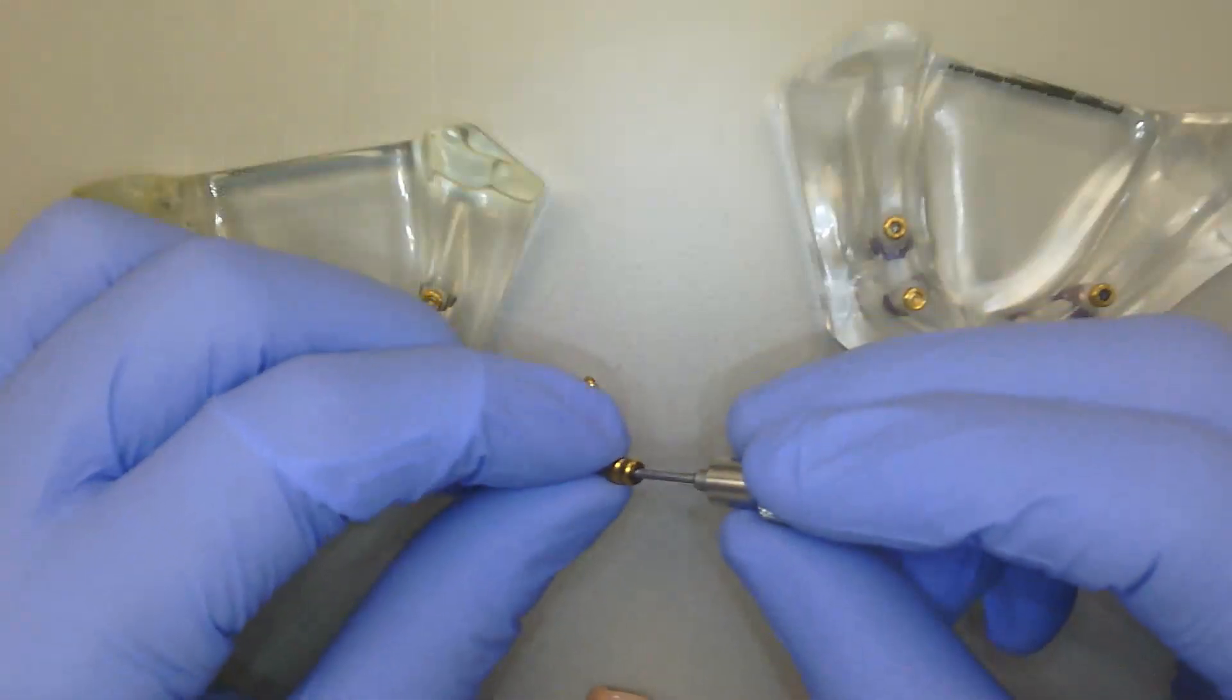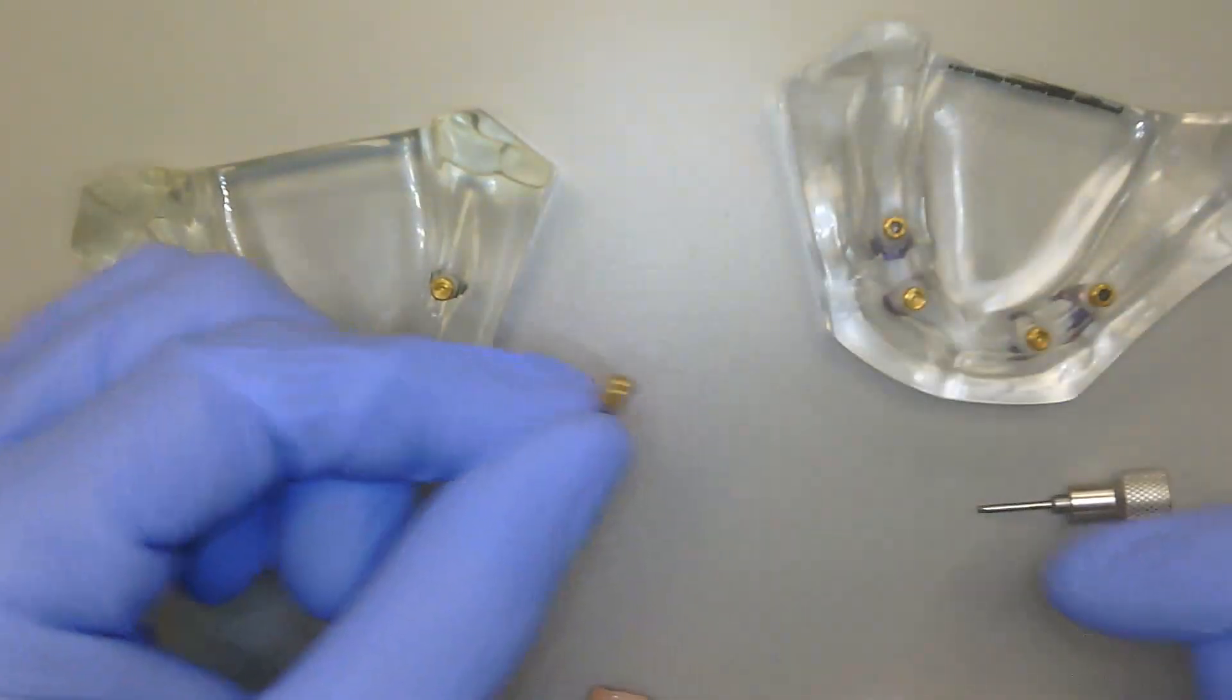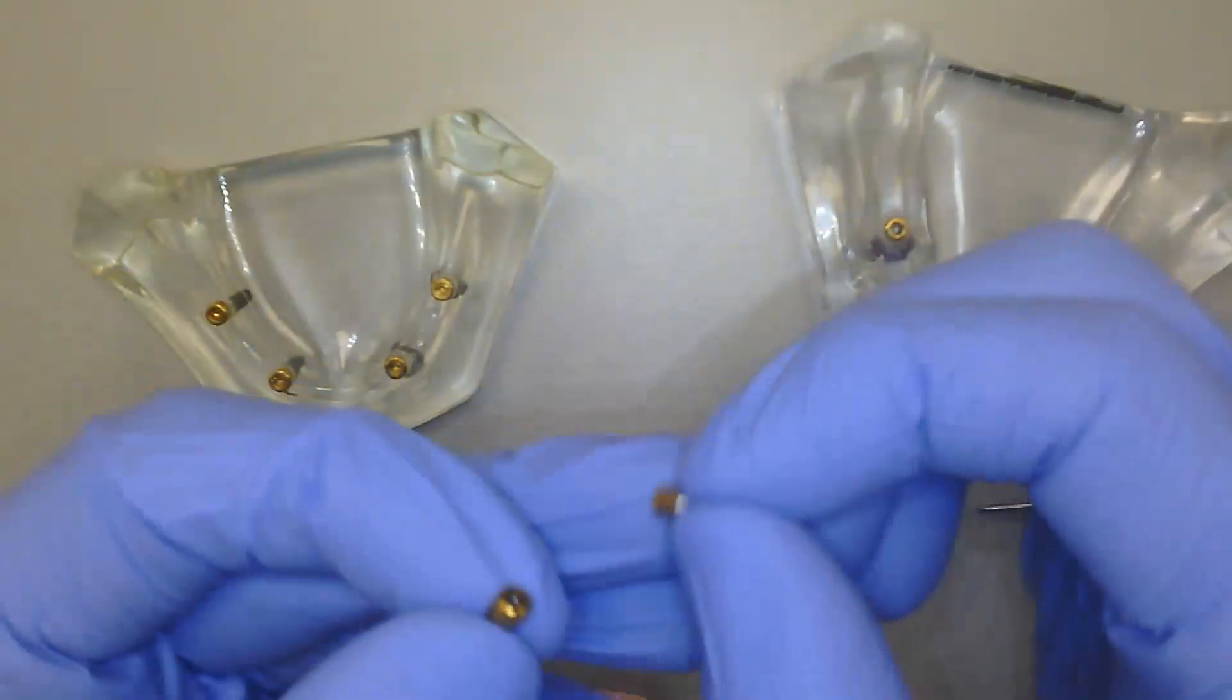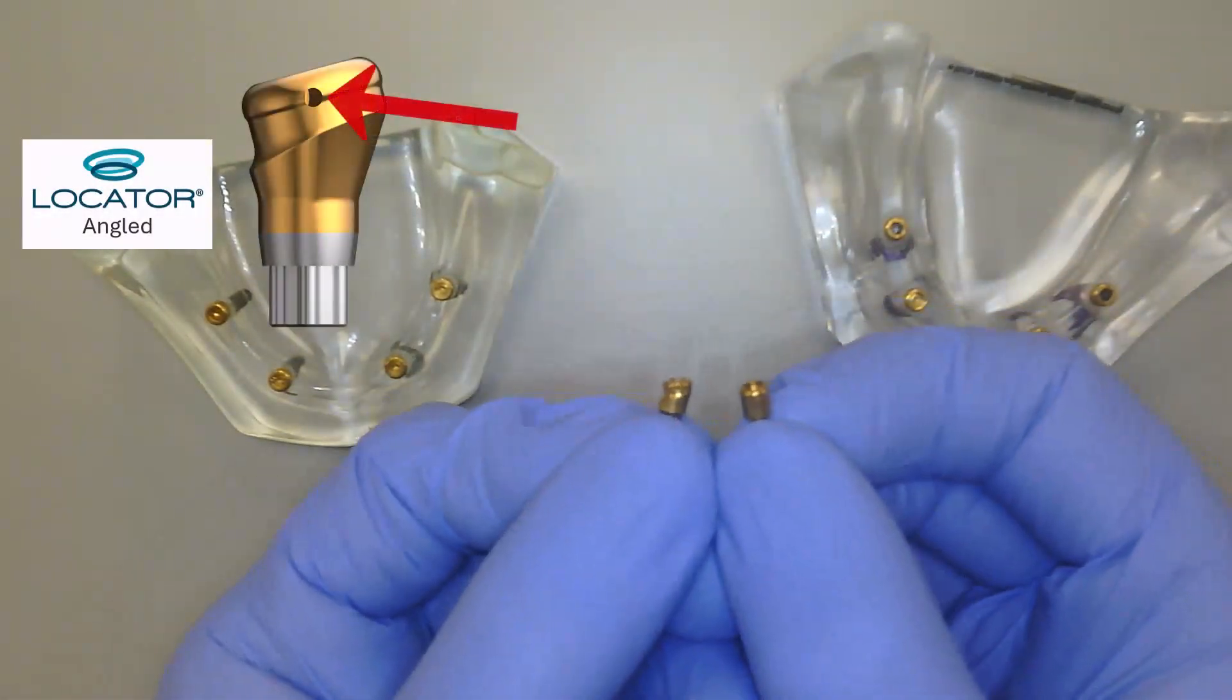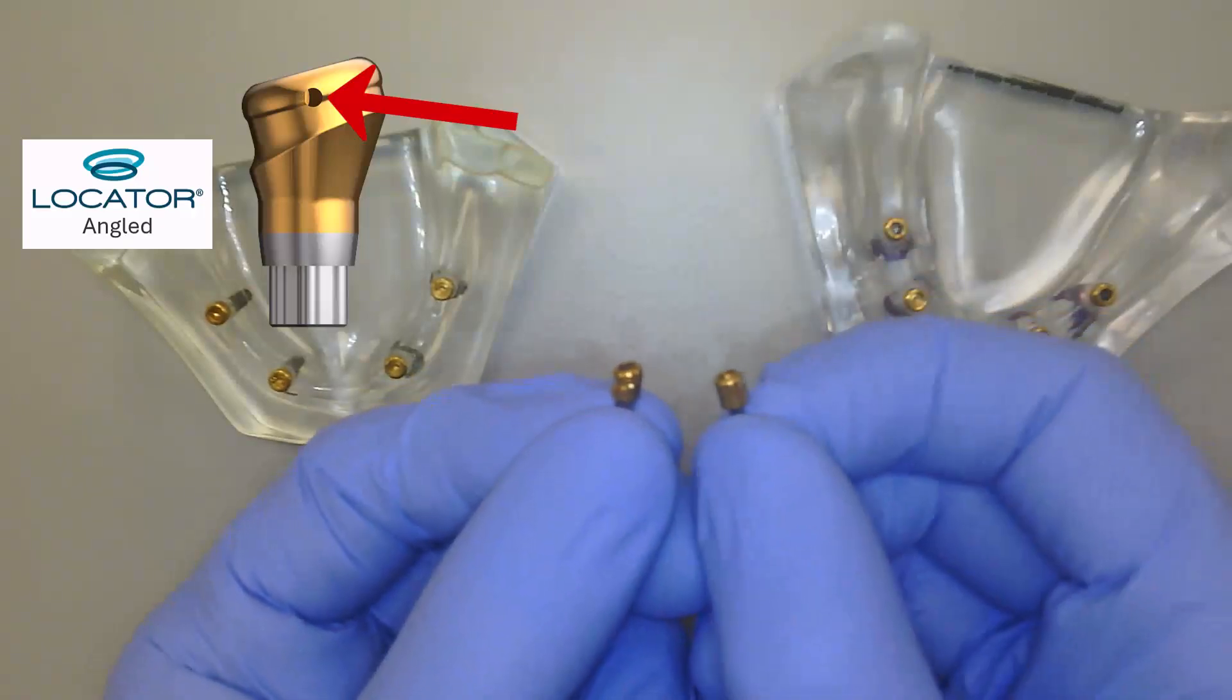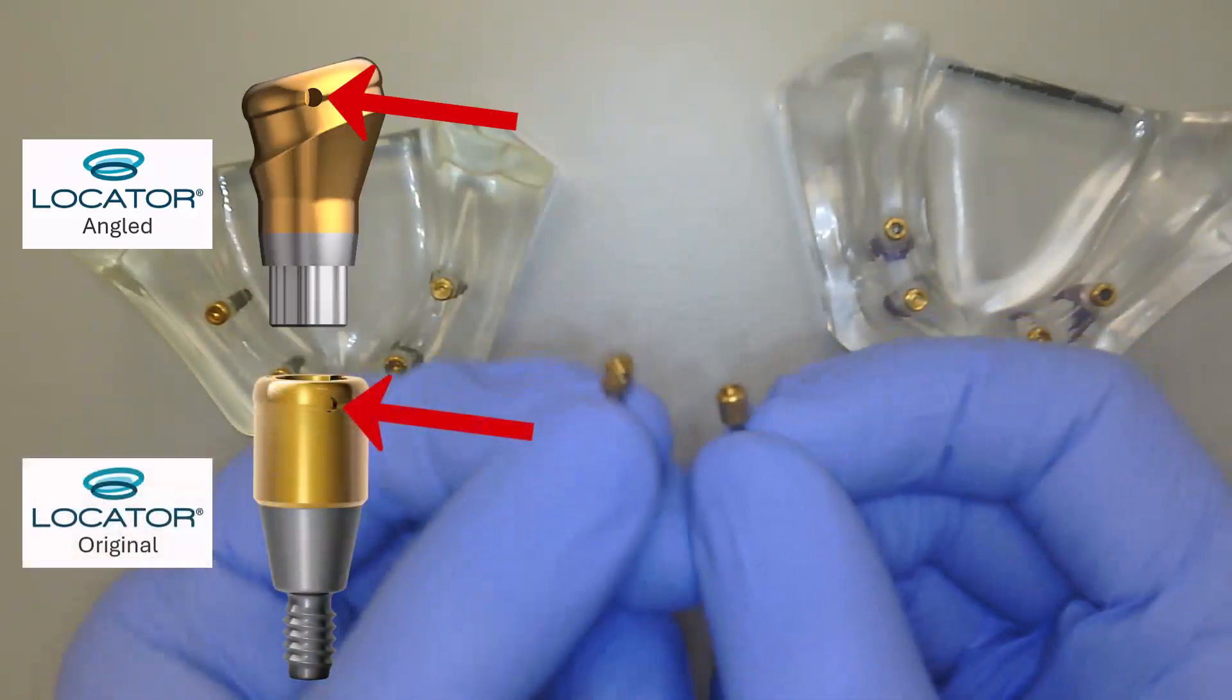Additionally, this allows me to utilize the same exterior geometry that we would have on our locator abutment. In addition, it also has this tiny little hole on the side of the abutment that's called the weep hole. That is the same between the locator and the locator angled.